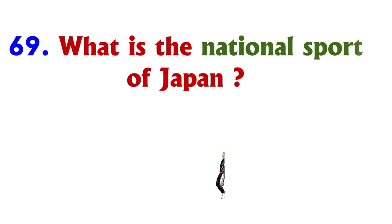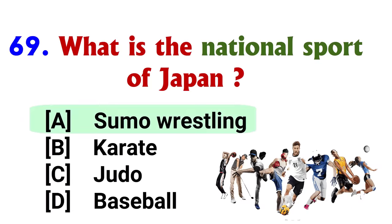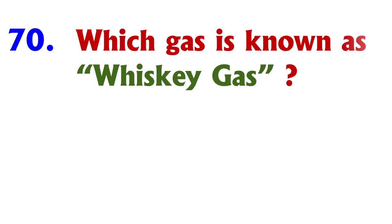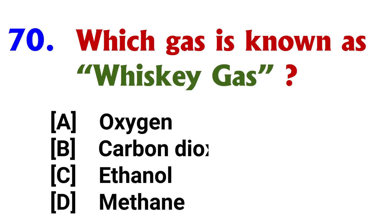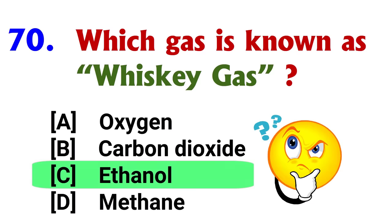What is the national sport of Japan? Answer: option A, Sumo wrestling. Which gas is known as whiskey gas? Answer: option C, Ethanol.